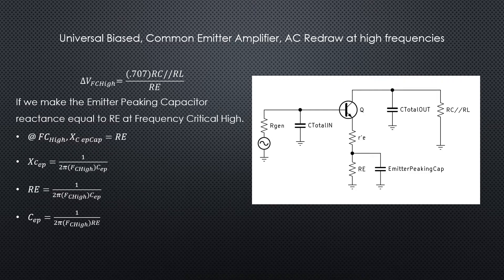So if we want the denominator to essentially degrade or decline at the same rate as the numerator in our voltage gain formula, we need to find a capacitance that goes in parallel with re that is resonant at the same frequency—at the same fc high that's what's happening in the numerator.